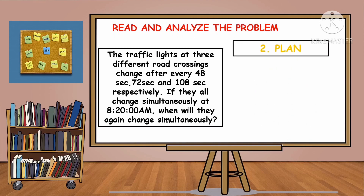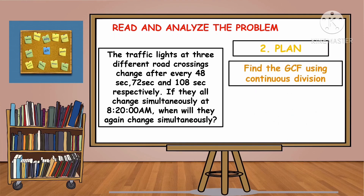The second step is to find the GCF using continuous division. Why are we looking for the GCF? Because the problem says: if they all change simultaneously at 8:20 AM, when will they change at the same time again? So, we are going to find the GCF.